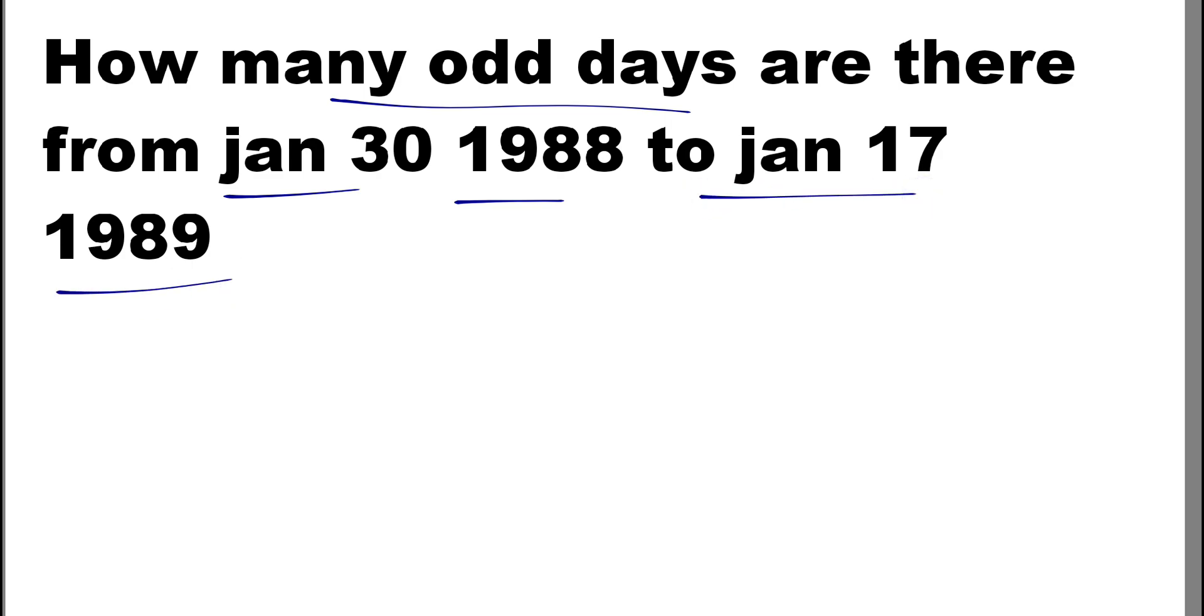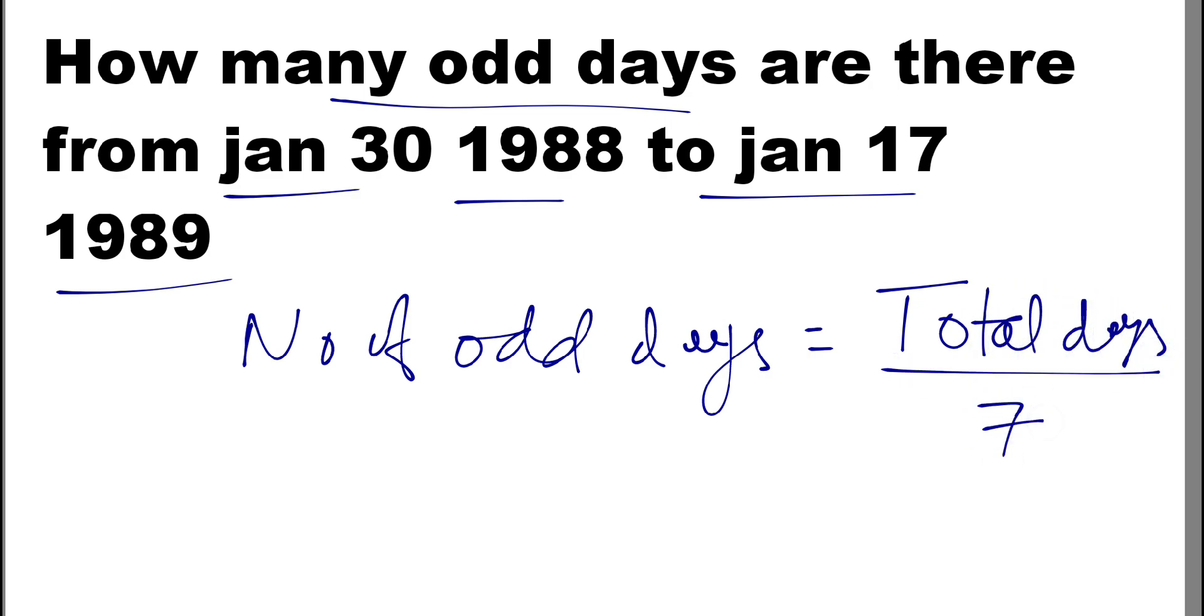Odd days basically, we just need to find the total number of days. Number of odd days can be calculated by finding the total days divided by 7, and the remainder we get from the division is actually the number of odd days. So basically, we can write this as days mod 7.